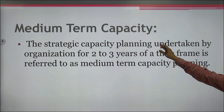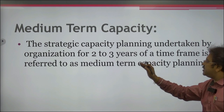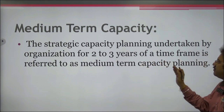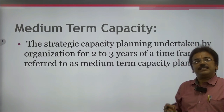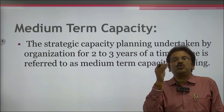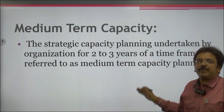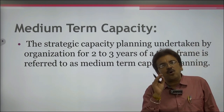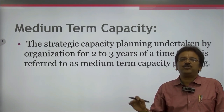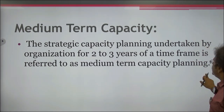Strategic capacity planning undertaken by an organization for a 2 to 3 year time frame is referred to as medium-term capacity planning. The same four concepts — design, productivity, effectivity, and sustainability — should be considered in medium-term capacity planning, just as in long-term capacity planning.